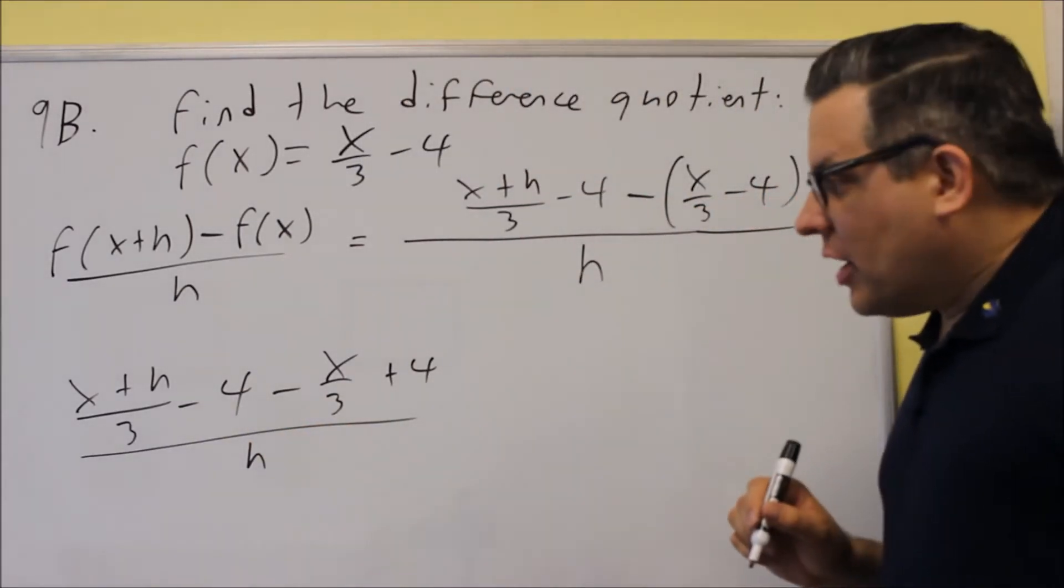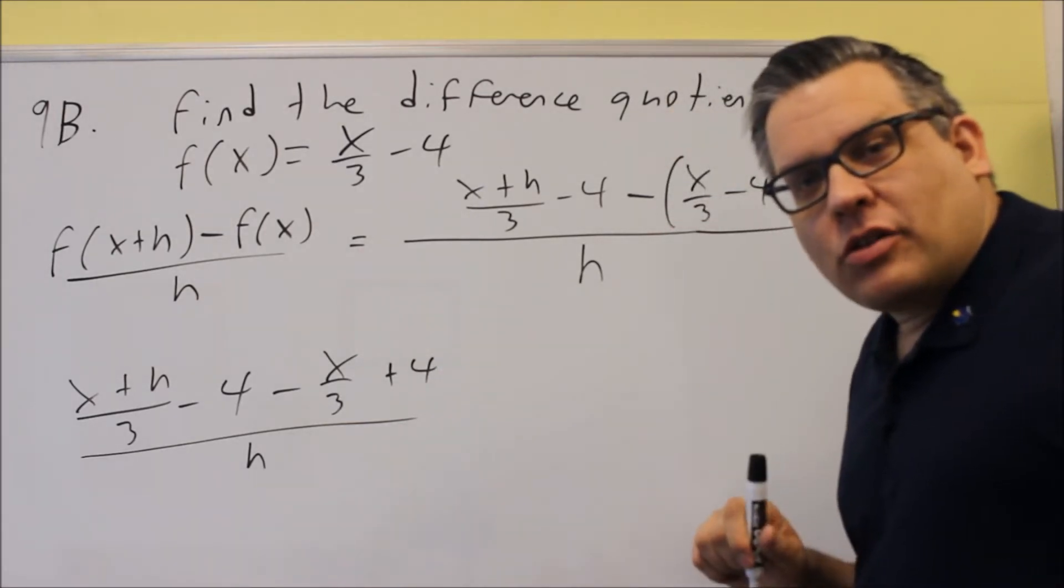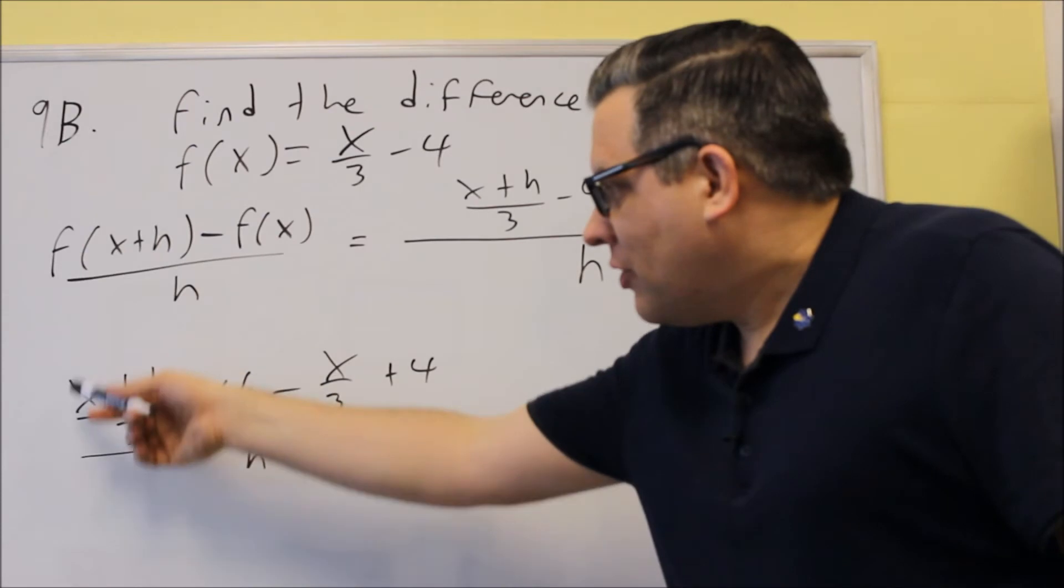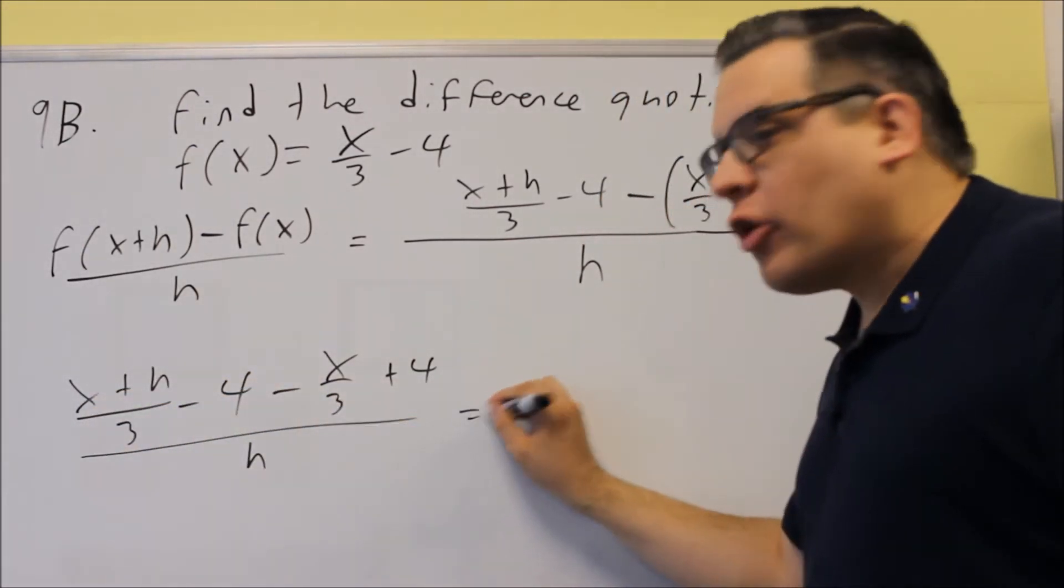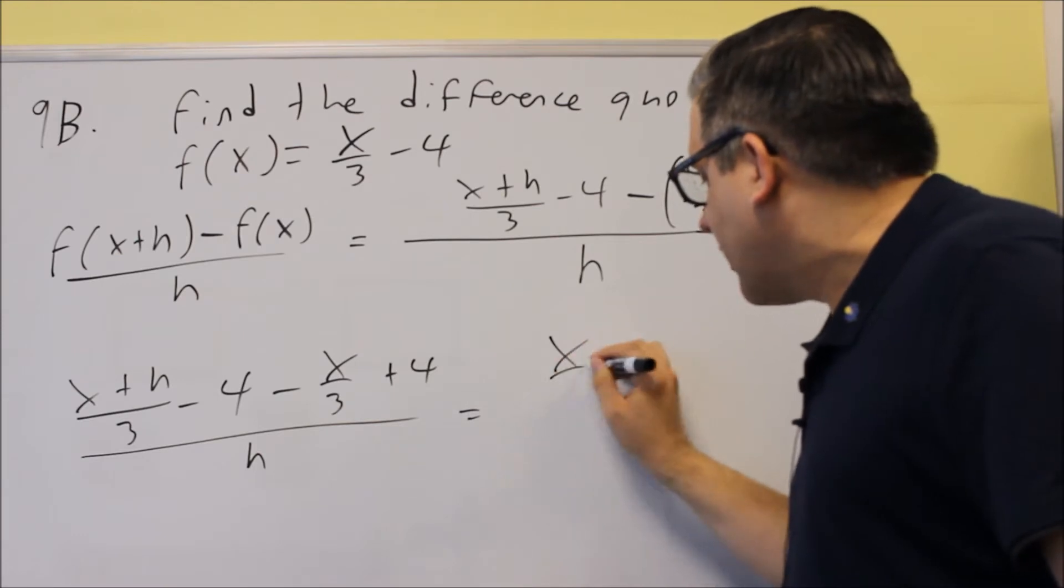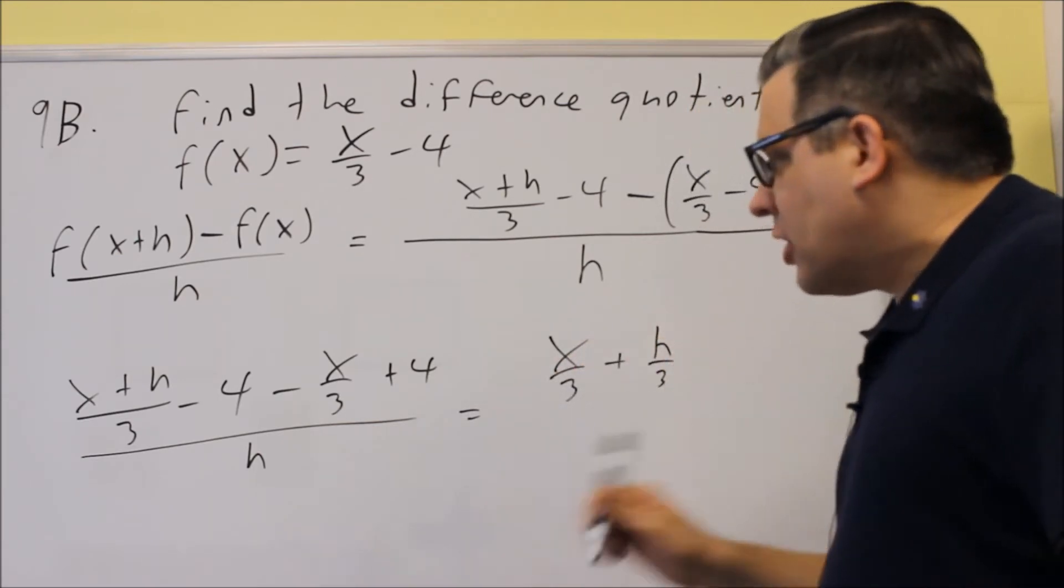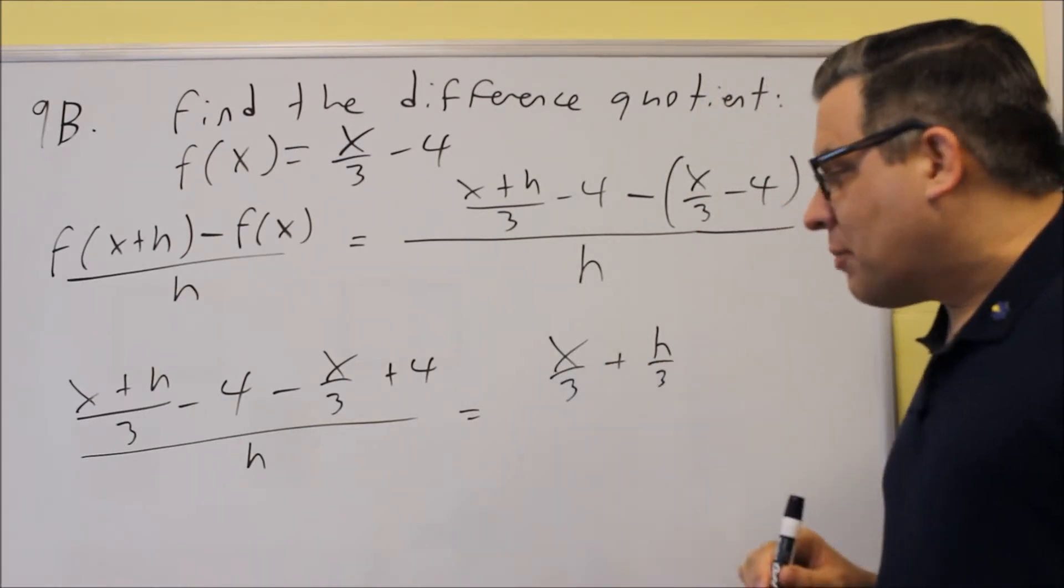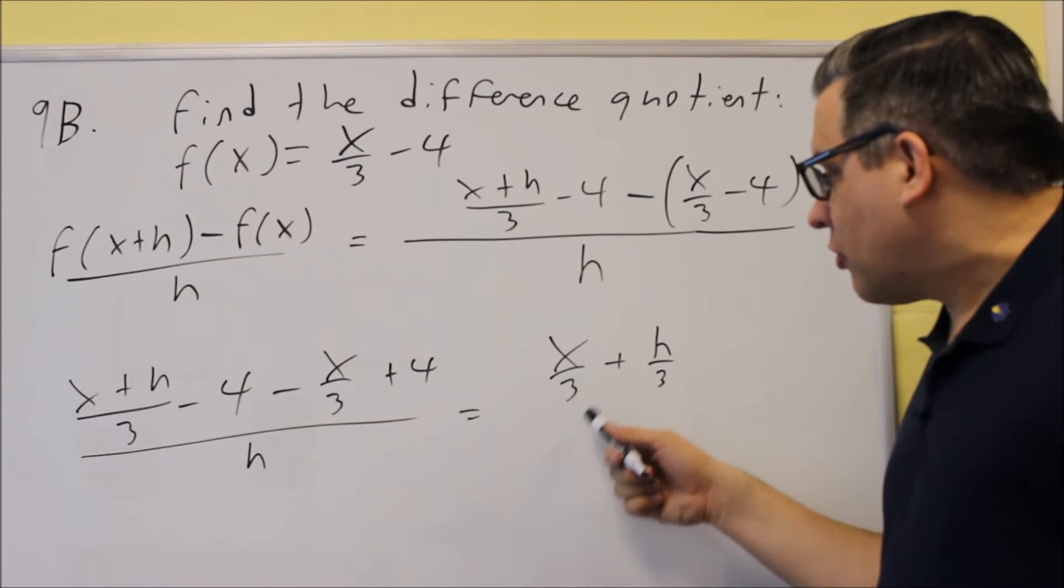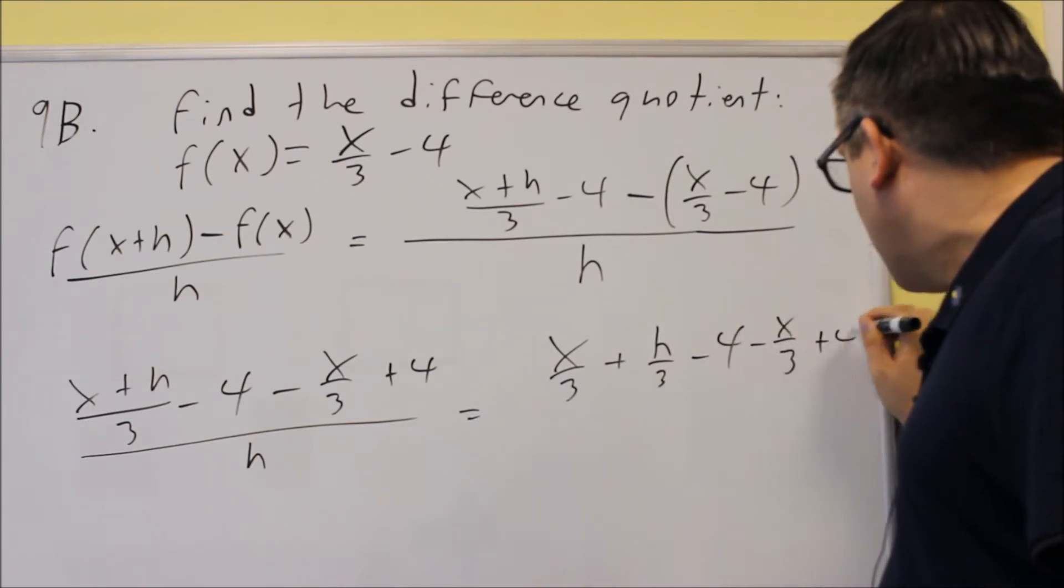Now, in order to make this to where you can cancel out a little bit more, what I recommend in this one is this first part right here, x plus h over 3. What I recommend is that you split it up like this into two different fractions. Because both of them are being divided by 3, it's okay to split this up and write it like this. So, x over 3 plus h over 3 minus 4 minus x over 3 plus 4.